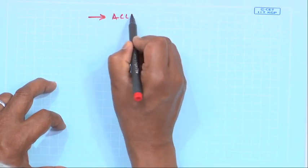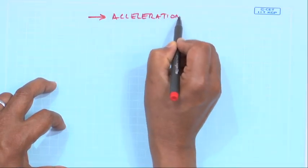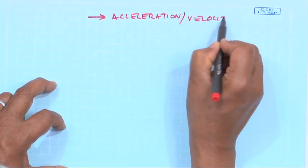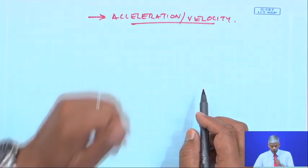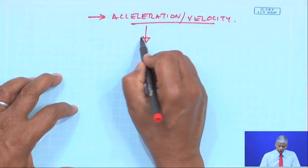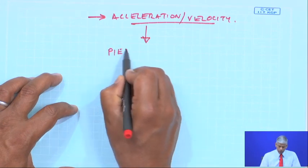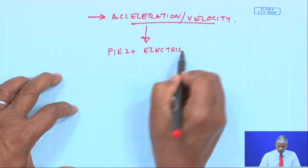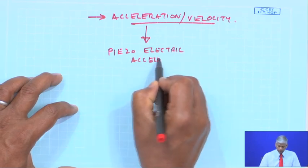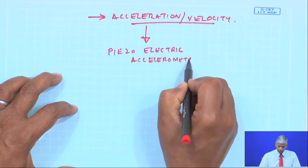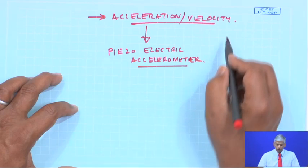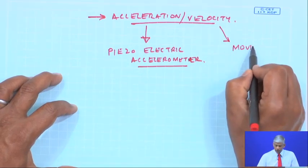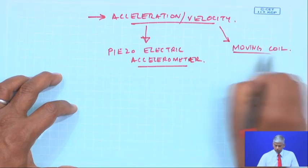If I am measuring vibrations at high frequencies or intermediate frequencies in terms of acceleration, I can derive either acceleration or velocity as required. So there are transducers to measure acceleration and velocity. For measuring acceleration it is mostly the piezoelectric accelerometer, and for velocity there is the moving coil transducer.